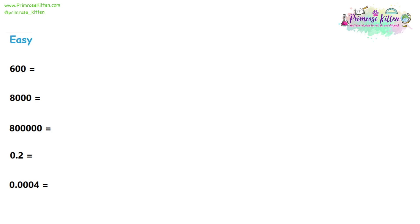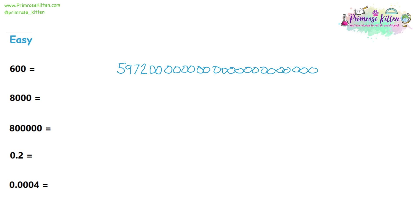We're going to write these five numbers in something called standard form. Before we answer these five questions, we're going to talk about what standard form is and why we use it. I'm going to write a number down — think about how long it takes me to write and think about how you would say this number out loud. So we're starting off with a five, a nine, a seven, and a two, and then we're going to have some zeros. Are we going to be able to say this number out loud? Probably not. It took a good 20, 30 seconds to write. So what is the number? This number is the mass of the Earth in kilograms.